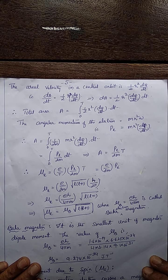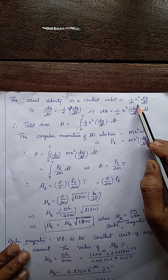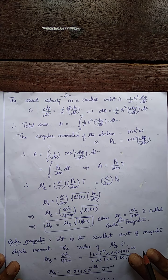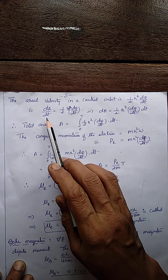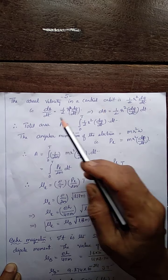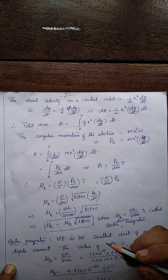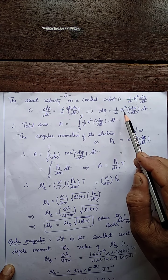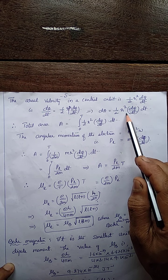The areal velocity of the electron in this central orbit is given by ½r²(dφ/dt), where r is the radius vector between the nucleus and the electron. The rate of change of area, dA/dt = ½r²(dφ/dt). So dA = ½r²(dφ/dt)dt, and the total area of the loop is obtained by integrating this expression between the limits 0 and T.